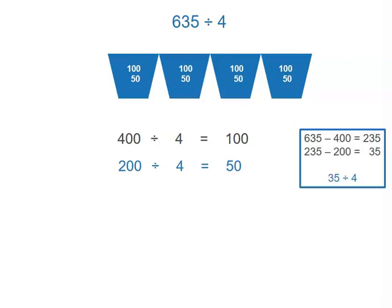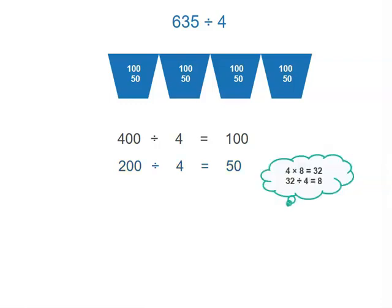We've shared 400 and then another 200, so we have 35 left. Now I'm thinking about my four times tables. I can't share 10 because that would be 40. 4 nines are 36, 4 eights are 32. Working backwards from 40, I realize 4 eights are 32, so 32 divided by 4 equals 8. Even though I can't share all of 35, I can share 32 among 4, and they get 8 each.